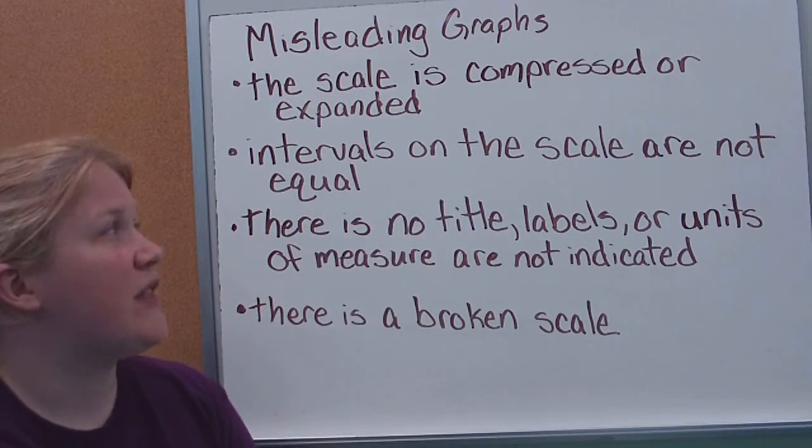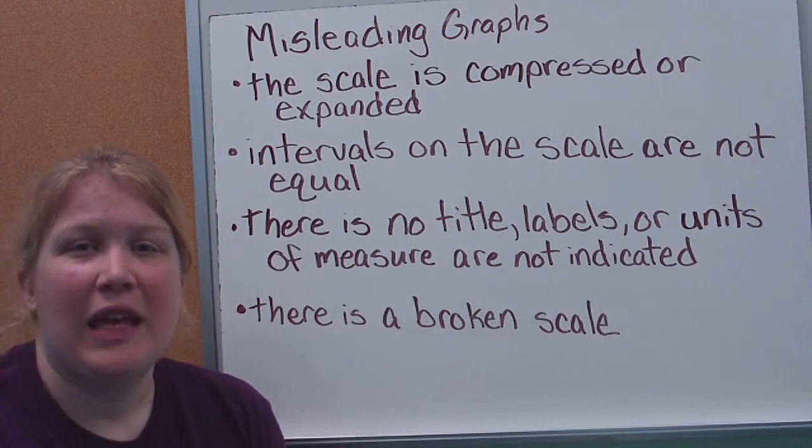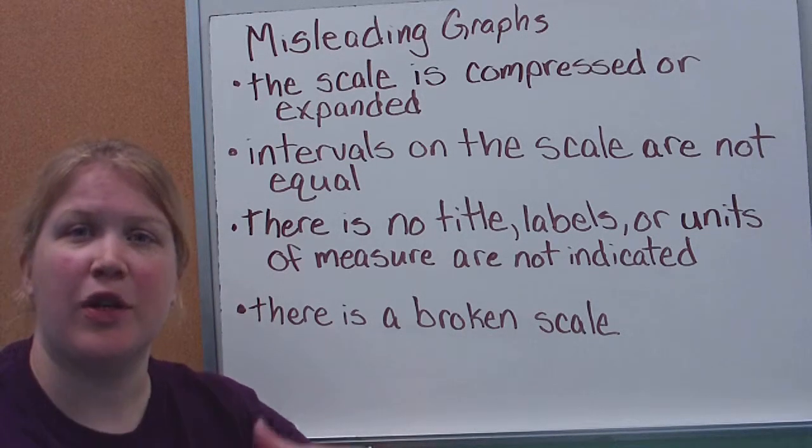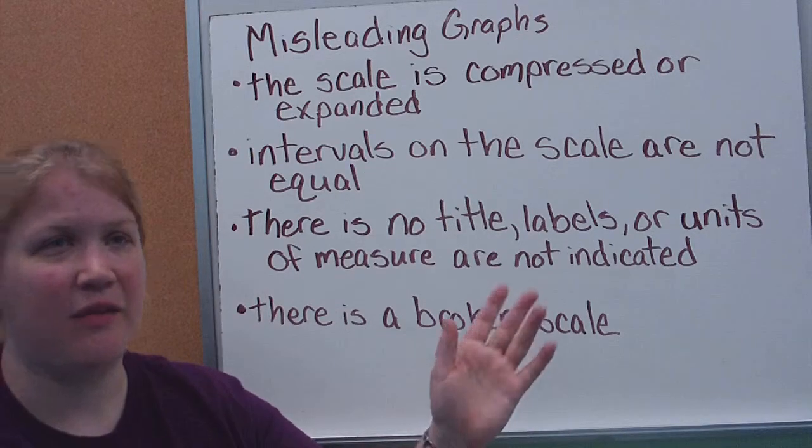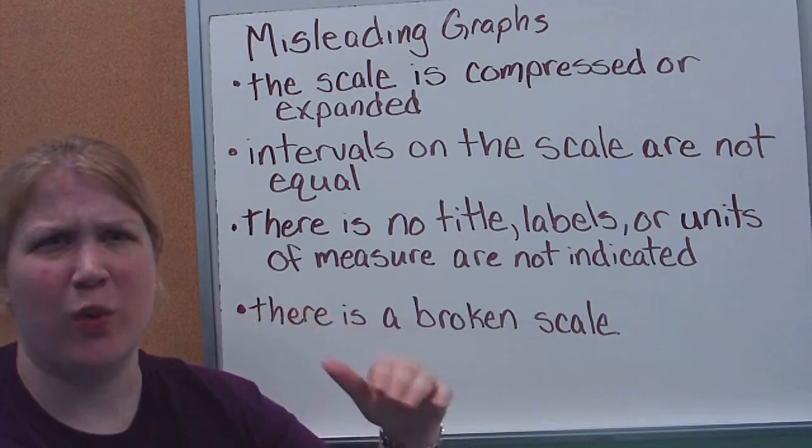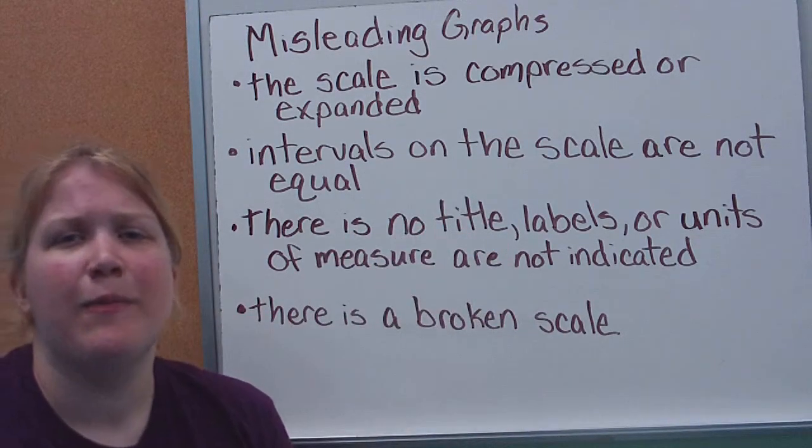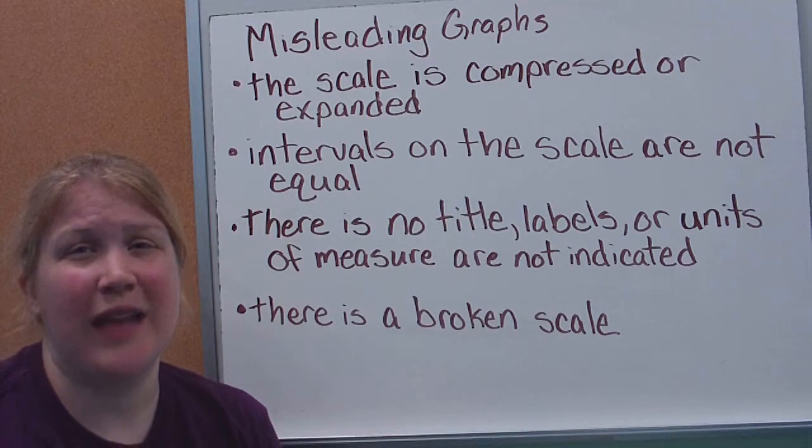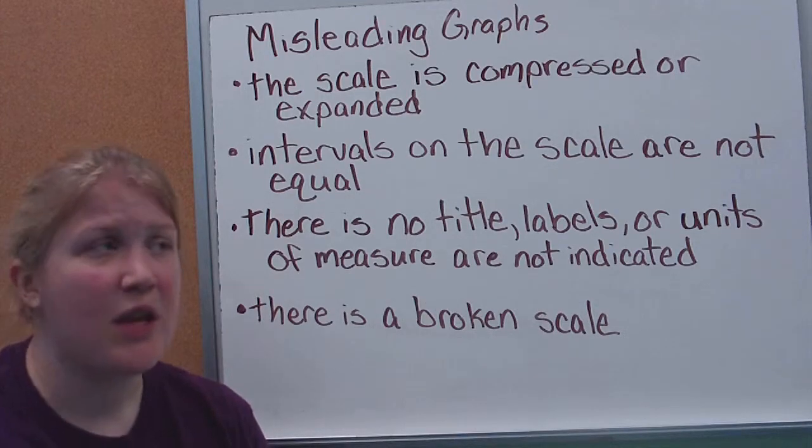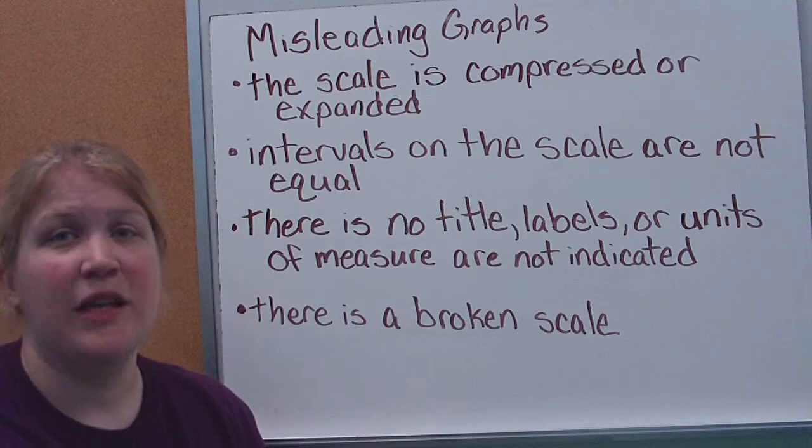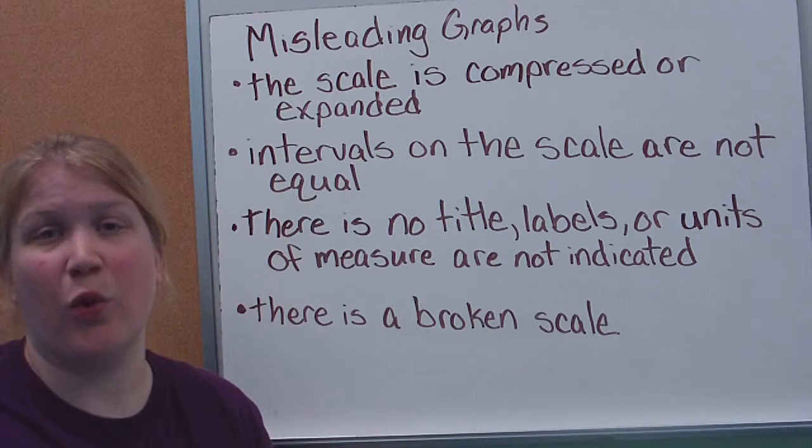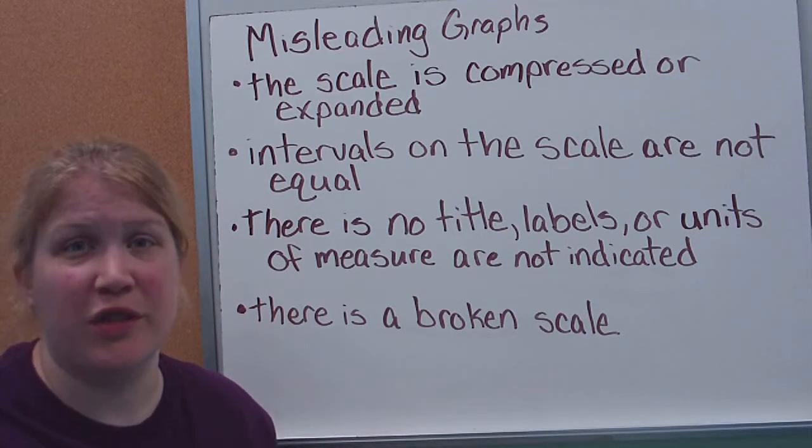Another thing is the intervals on the scale are not equal. If they start out going by 50s and then all of a sudden they flip to going up by 10s. So I have 5, 10, 15, then I decide to go 25, 35, 45. That does not have the same interval. Whenever you're picking a scale, we've talked about that with our previous graphs, you should always have the same interval on it. So if you suddenly shift an interval, that's going to make your data look different too.